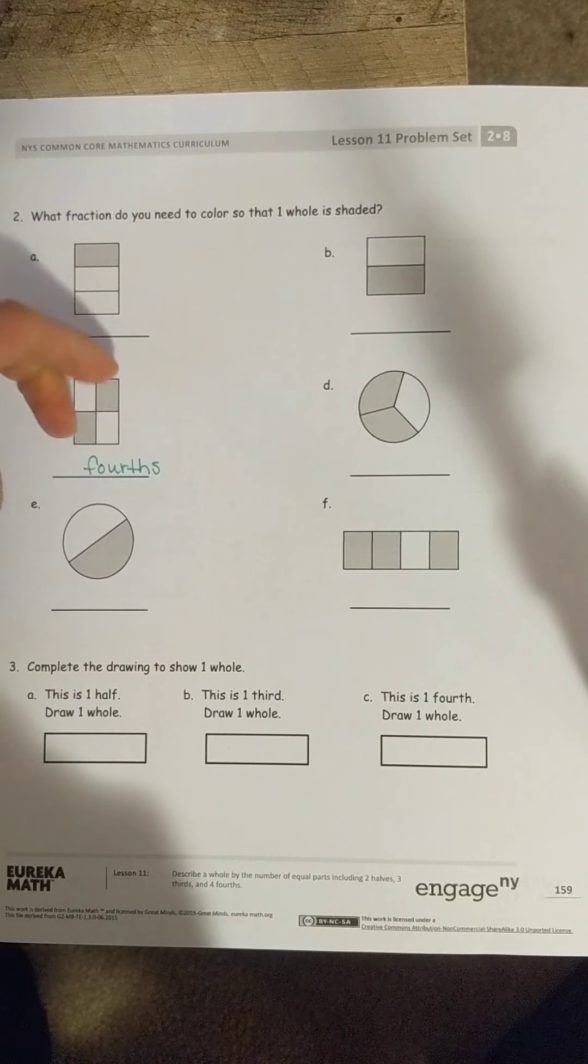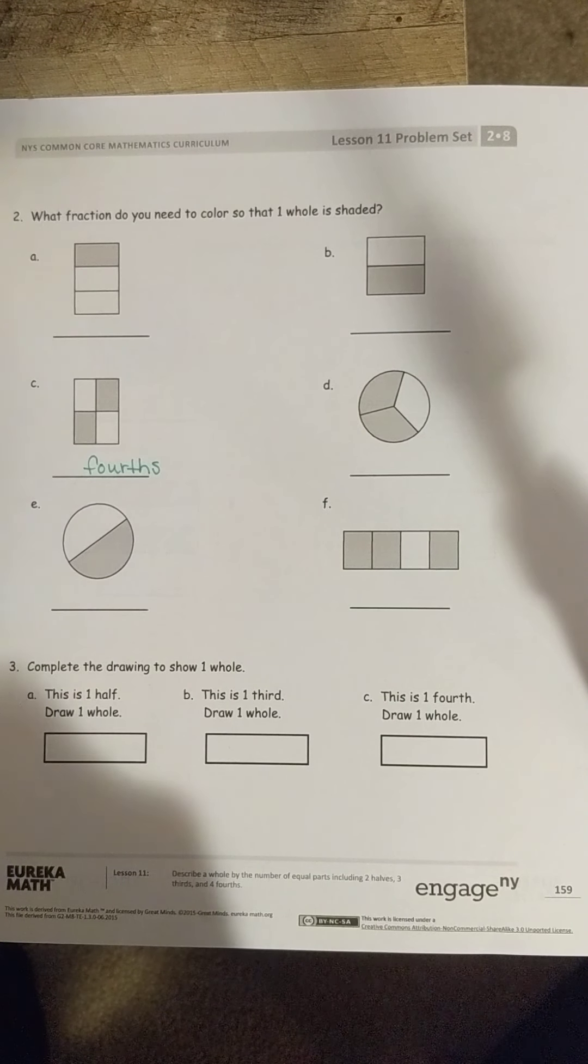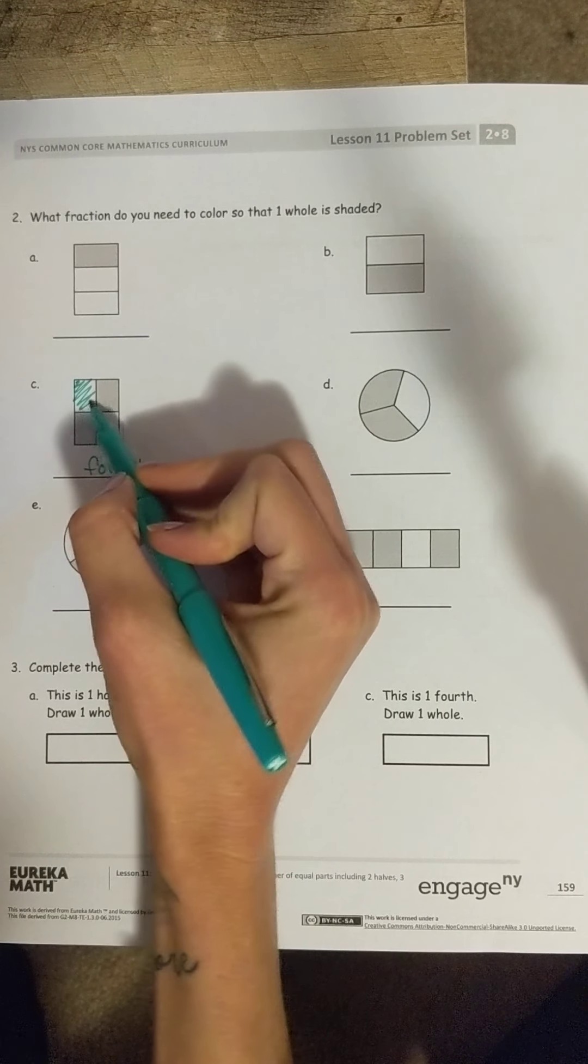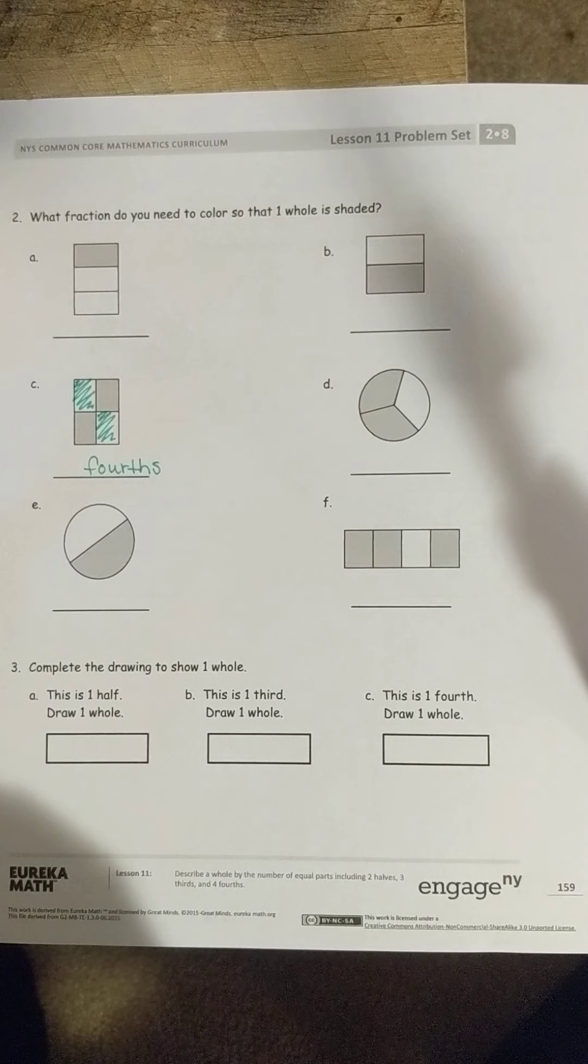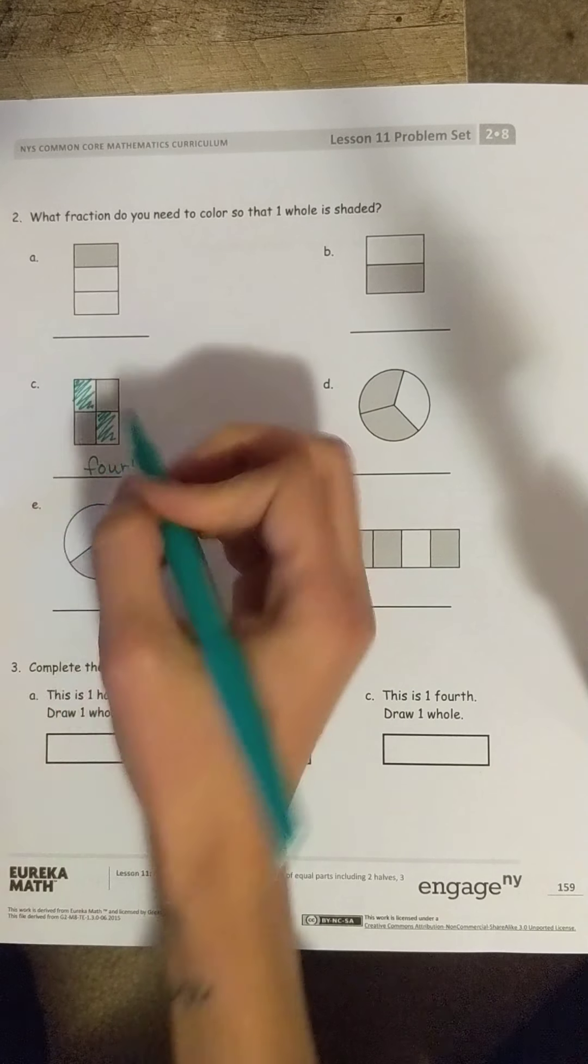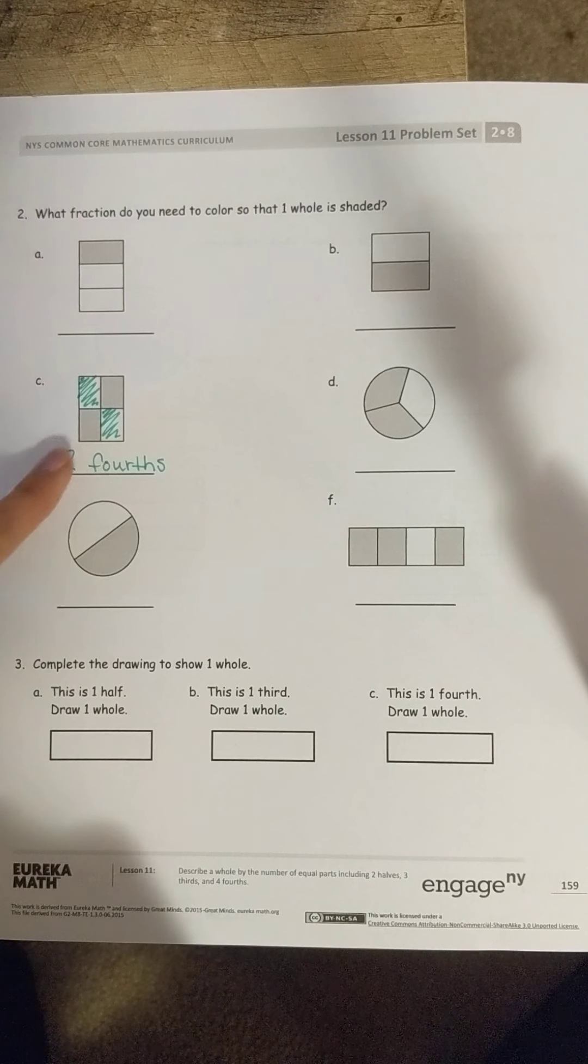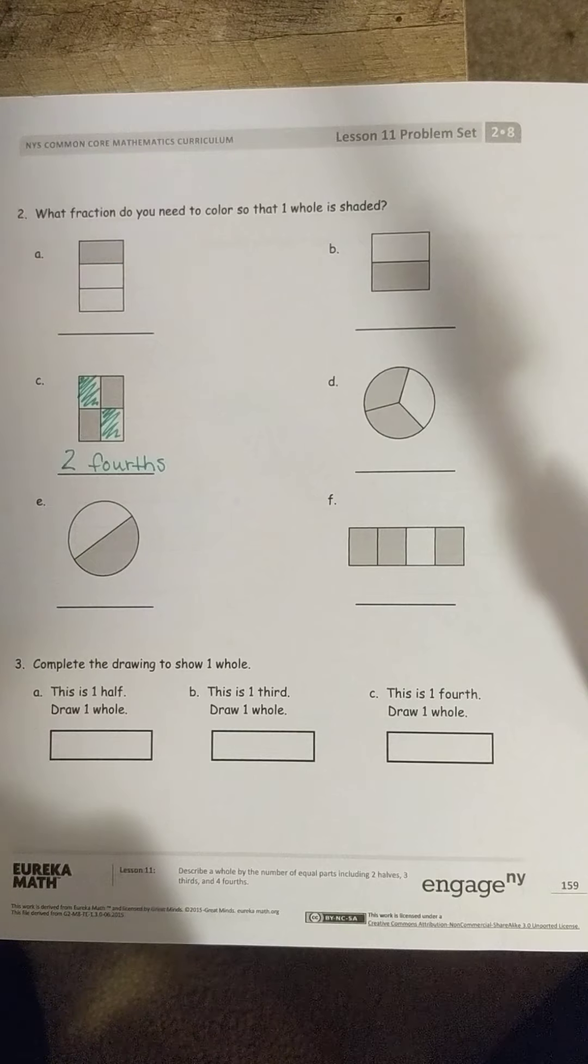I see two are shaded in. So, it wants me to find the part that is not shaded, the part I still need to color. So, I need to color this one. So, I'm going to go ahead and do it, and this one. How many parts did I shade? Out of all four, I shaded two. So, that means I needed to color in two fourths to make the whole shape filled in.